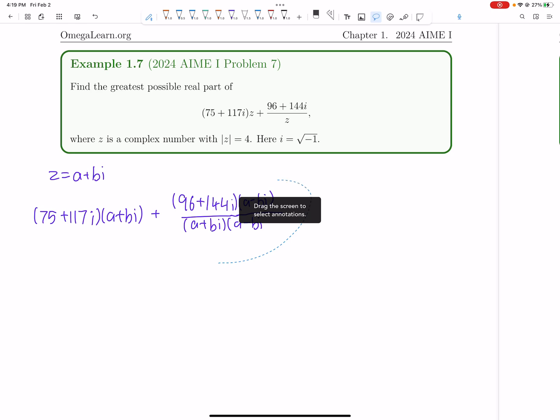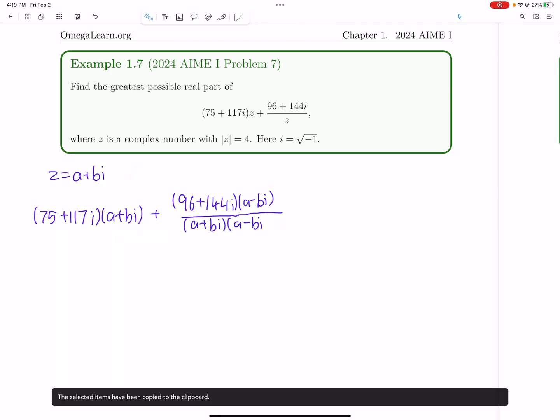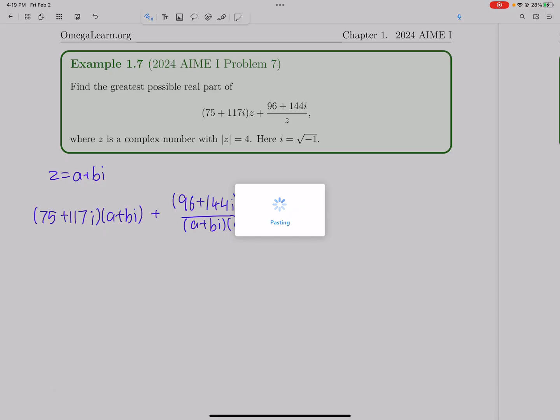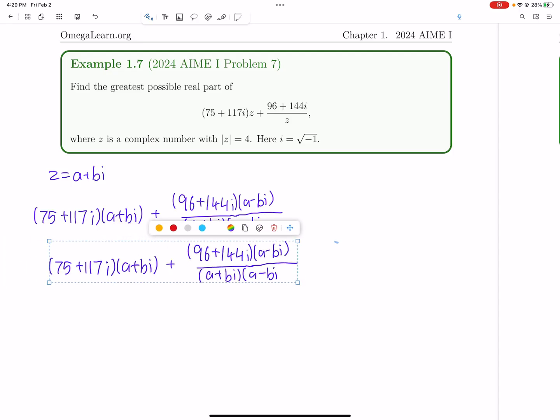And this is equal to this, and now we can make this denominator just a squared plus b squared just by difference of squares.